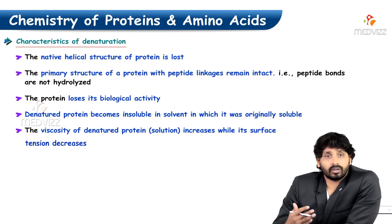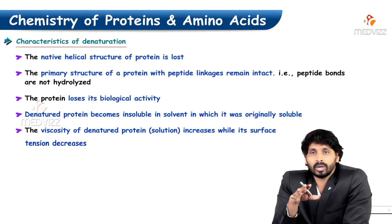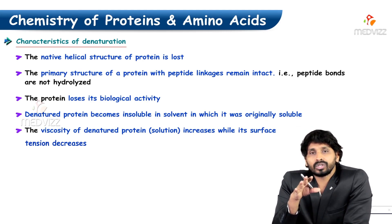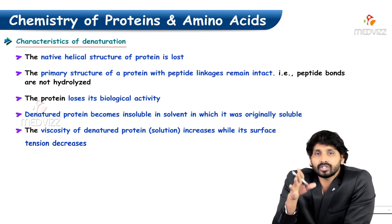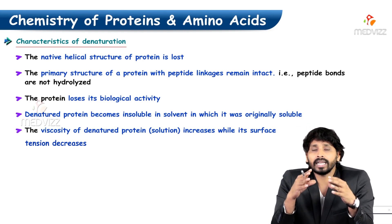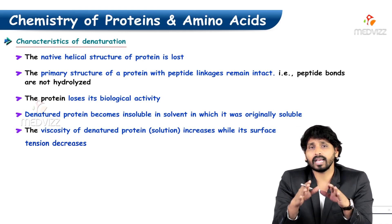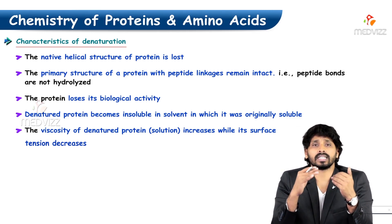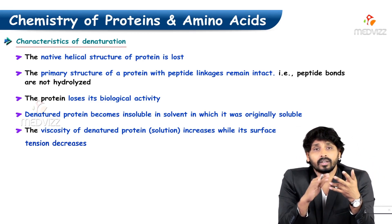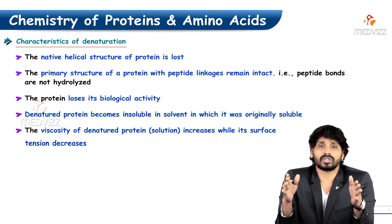The characteristics of denaturation include loss of the native helical structure of protein. All secondary, tertiary, and quaternary structures that give stability to the protein and play a major role in its functioning are lost. The primary structure with its peptide linkage remains intact, as peptide bonds are hydrolyzed only by digestive enzymes. When a protein undergoes denaturation and loses its secondary, tertiary, and quaternary structure, it also loses its biological activity — literally losing its function.